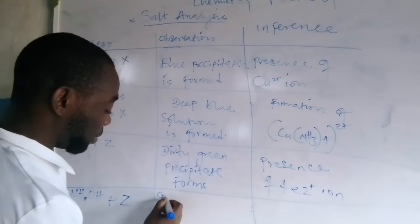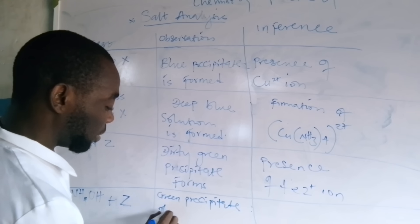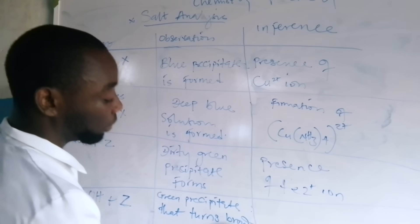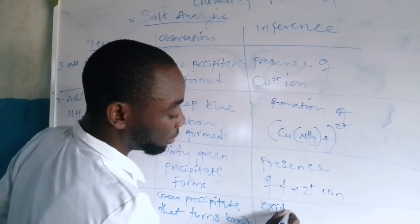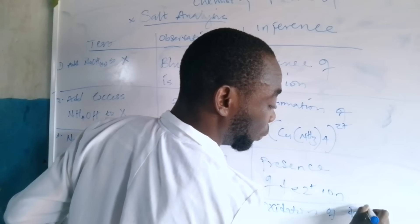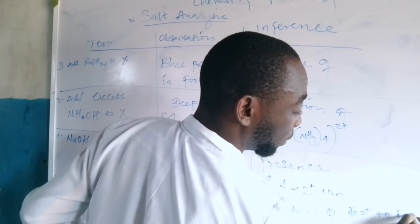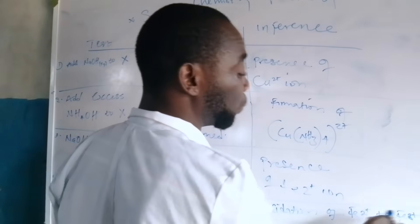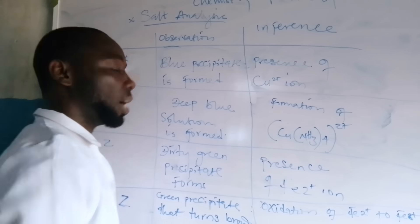Observation: green precipitate that turns brown. Under the inference: oxidation of ferrous ion (Fe²⁺) to ferric ion (Fe³⁺), i.e., iron two ion is oxidized to iron three ion.